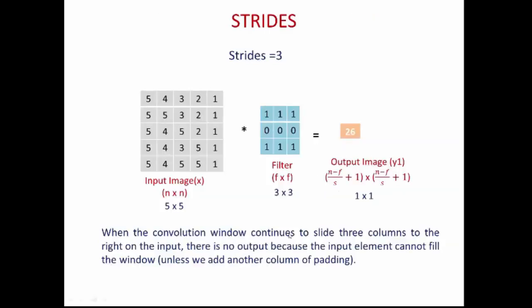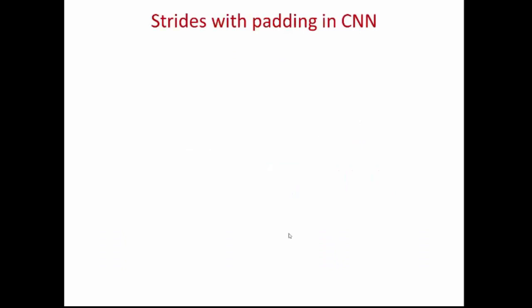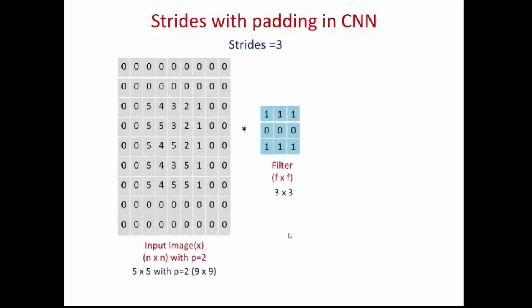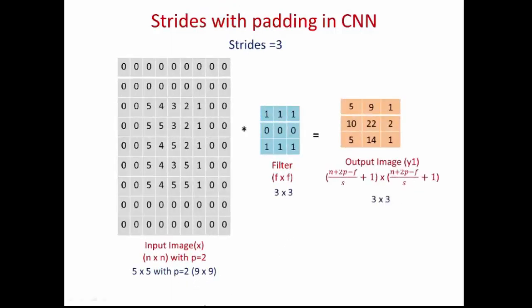By adding padding, it is possible to eliminate this problem. Let me explain how padding and strides work together in convolution. With stride=3 and padding p=2, the input image becomes 9×9, which is convolved with a 3×3 filter to produce a 3×3 output image.